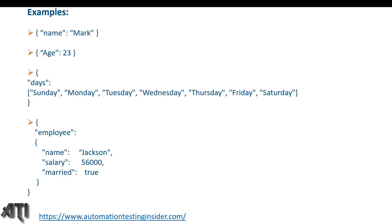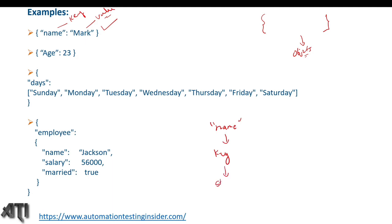Let's look at how we write data inside a JSON file. Whatever we write inside curly braces is an object in JSON. JSON objects hold key-value pairs. For example, 'name' is a key and 'Mark' is a value — name is of string type. Always remember: the key should always be of string type and written within double quotation marks, separated by a colon. The value 'Mark' here is of string type.